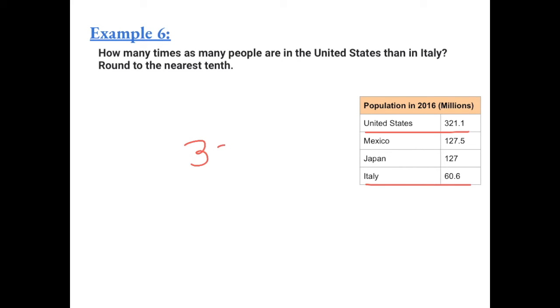We can divide the amount of people in the United States by the amount of people in Italy to see how many times bigger the United States population is. We have to make the number on the outside a whole number, so I'm going to move the decimal to the right one and do the same to the number under the division bar. Now we're going to have 3211 divided by 606.